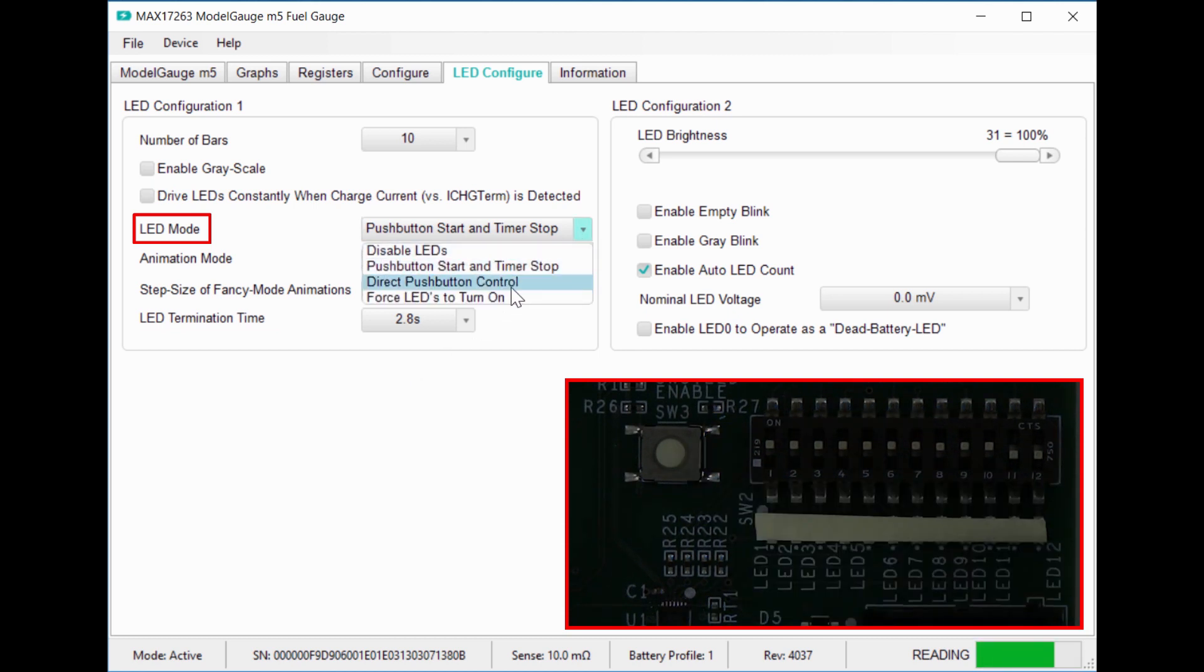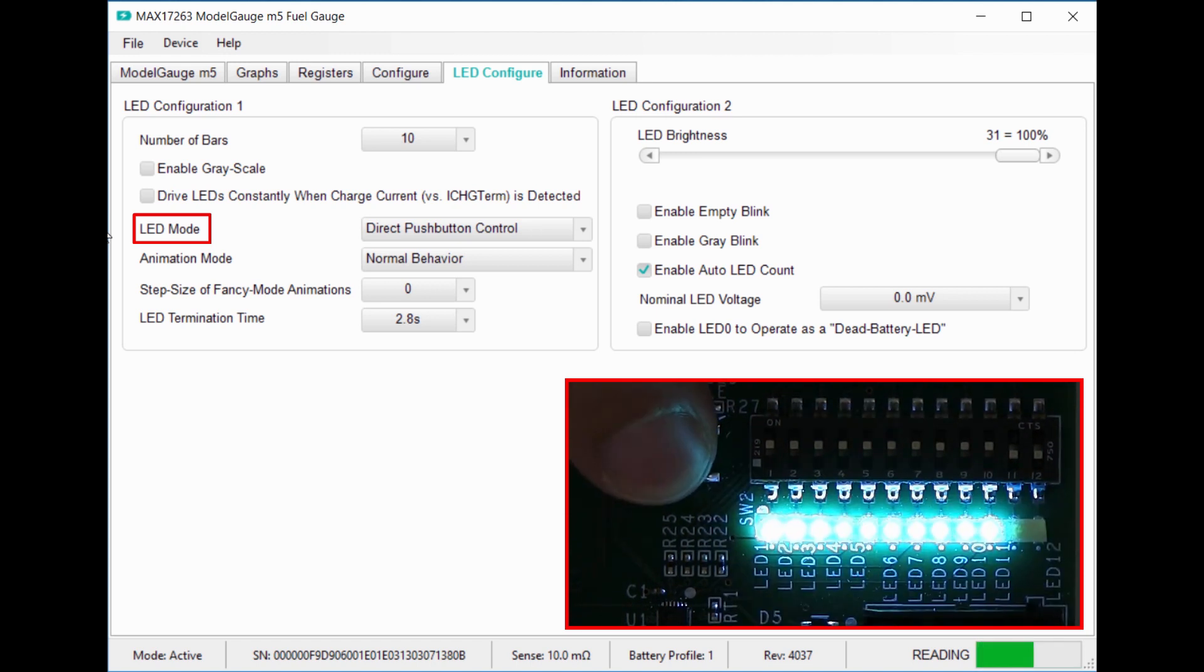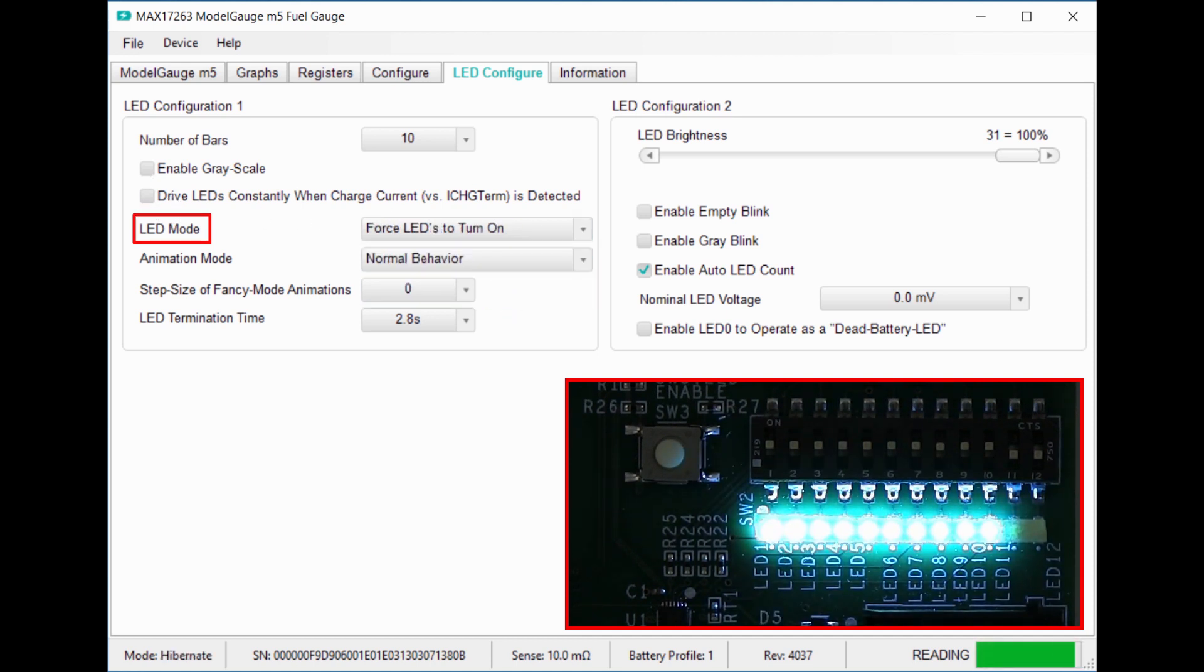I can also set direct push button control, which will keep the LEDs on when I hold the button down. In both of these states, you can use the checkbox here to keep the LEDs on when the battery is charging. For now, I'm going to force the LEDs on so I can demonstrate some more features.